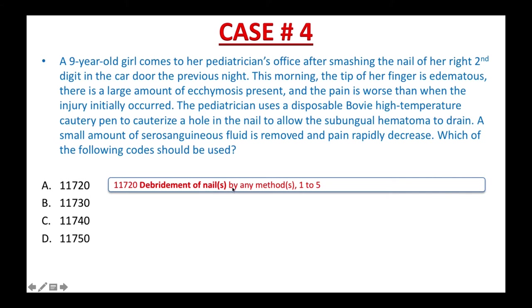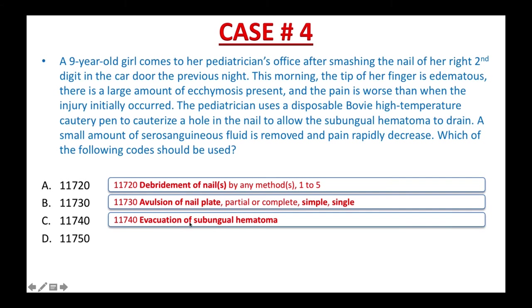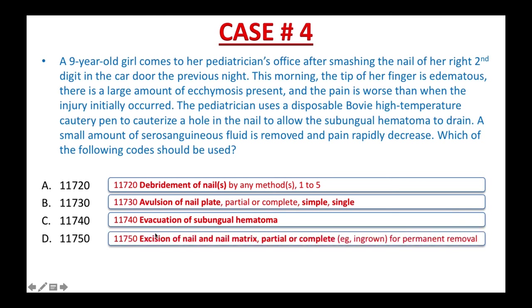Here's what you got. 11720: debridement of nails by any method, one to five nails — don't forget to highlight the main term that describes the procedure. 11730: avulsion of nail plate, partial or complete, simple, single — highlight the procedure and any term that describes the quantity or complexity. 11740: evacuation of subungual hematoma — highlight the main term that describes the procedure. 11750: excision of nail and nail matrix, partial or complete, ingrown toenail for permanent removal. After you highlight all the main terms and know the difference between each code, now is the time to read the procedure report.